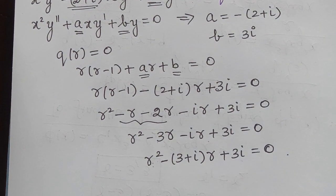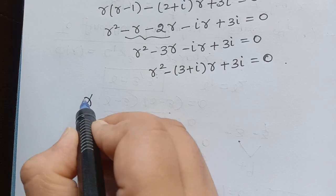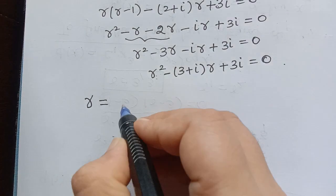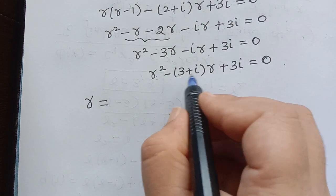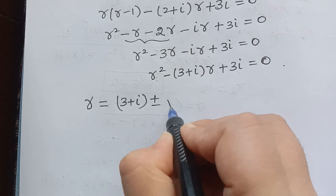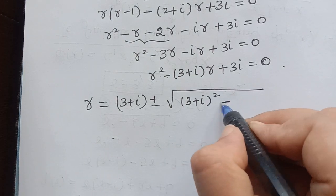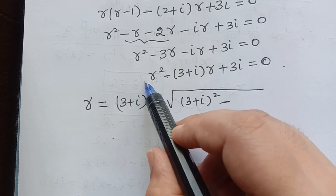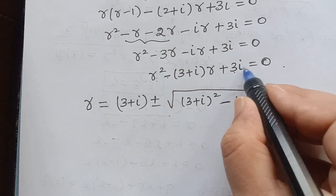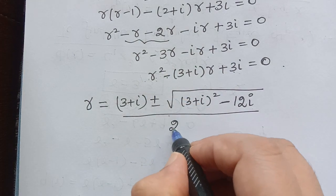To solve and find the roots r, we use the quadratic formula: r equals minus b plus or minus square root of (b squared minus 4ac), divided by 2a. Here b is negative (3 plus i), so minus b becomes positive (3 plus i), plus or minus square root of (3 plus i) squared minus 4·1·3i, all divided by 2.